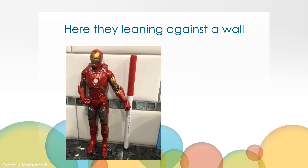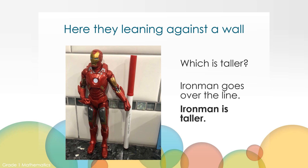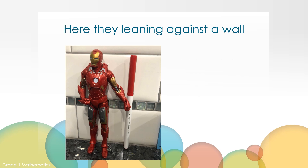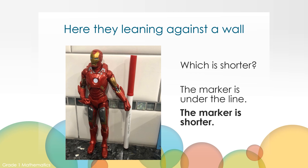What is taller? When I go to the doctors, I stand against the wall so they can measure me. Iron Man goes over the line — Iron Man is taller. Now let's think about which is shorter. The marker is under the line. The marker is shorter.